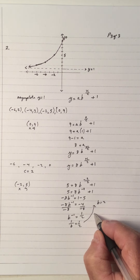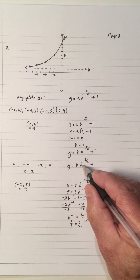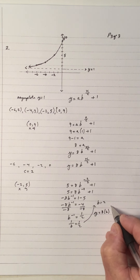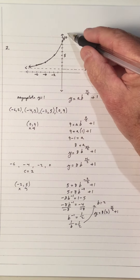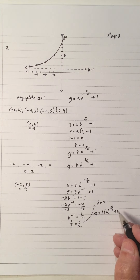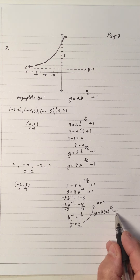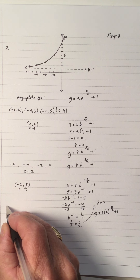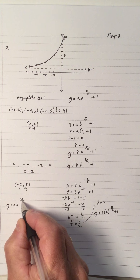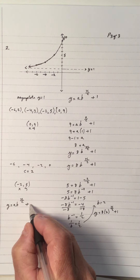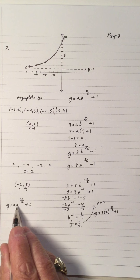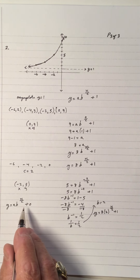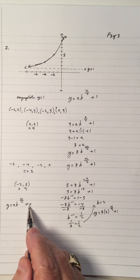The final equation is y equals eight times two to the x over two, plus one. This is a growth curve because as you go to the right, values go up, so base two fits. In the previous videos finding equations as y equals a times b to the x over c, there was no asymptote listed because the asymptote was understood to be zero. But in these two problems, we had non-zero asymptotes.